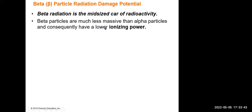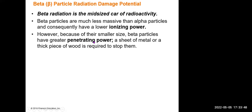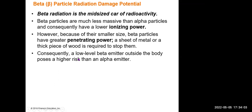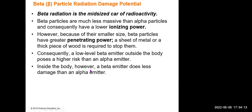The beta particle is like a mid-sized particle — its ionization power is not as high as alpha, but its penetration power is not as low either. To block beta particles, air or a piece of paper is not enough. A low level of beta emitter outside the body poses a higher risk than alpha emitter outside the body; however, beta emitters do not cause as much damage as alpha emitters inside the body.